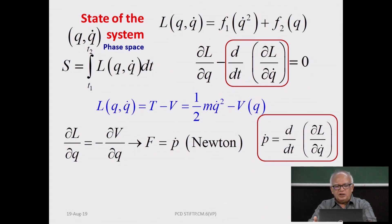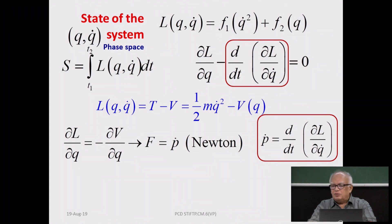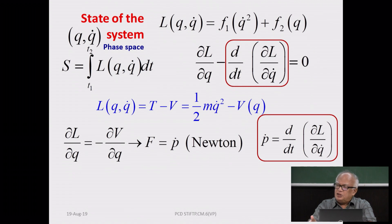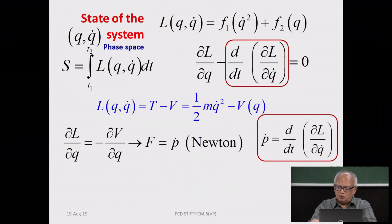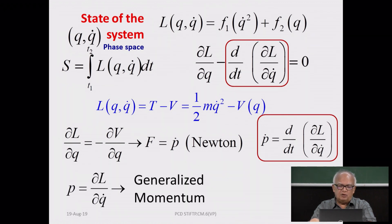When you take the partial derivative with respect to q, you get the rate of change of momentum — which is also what you get when you take the time derivative of the partial derivative of the Lagrangian with respect to velocity, now called the generalized velocity. q-dot is the generalized velocity, and the partial derivative of the Lagrangian with respect to q-dot is the generalized momentum. We use the formal vocabulary of generalized coordinates, generalized velocity, and generalized momentum in this formalism.